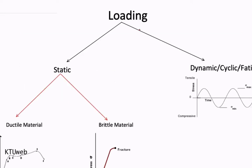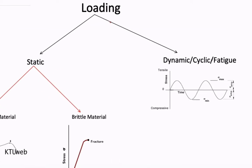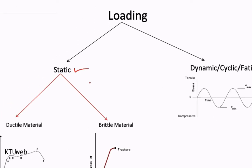The loading on a material can be broadly classified into two categories. The first category is the static loading situation and the second category is what we call the dynamic loading, or cyclic loading, famously known as the fatigue loading condition.